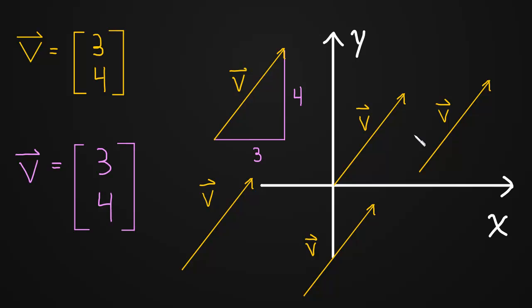Okay, so two important takeaways from this video is that vectors are independent of their position in the plane and vectors are uniquely determined by their components. Meaning if two vectors have the same components, they must be the same vector. Okay, see you in the next video.